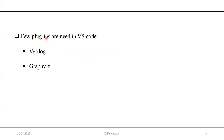We need some plugins in VS Code so that when we type Verilog keywords they are highlighted. There is one plugin for Verilog and another for Graphviz. I will show these during the demonstration. Let's go to the demonstration.